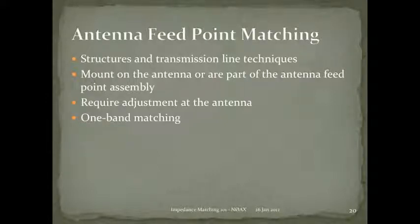Antenna feed-point matching is where you ideally want to do your impedance matching. If you can make the antenna look like 50 ohms, you hook up a 50-ohm cable, power goes through once and only once — no additional loss from bouncing, voltages and currents don't peak, and everyone is happy. There are both structural techniques and transmission-line techniques that mount right at the antenna or are part of the feed-point assembly.